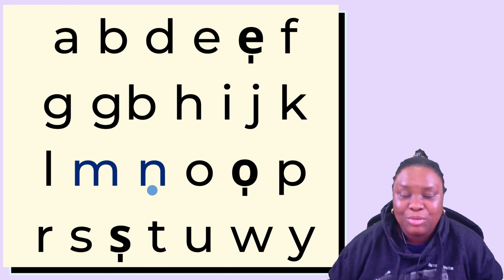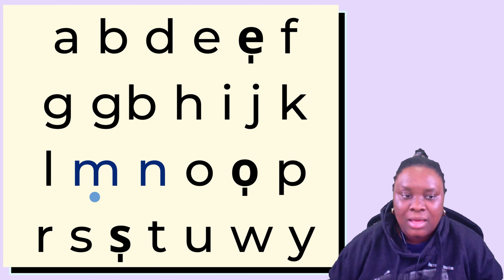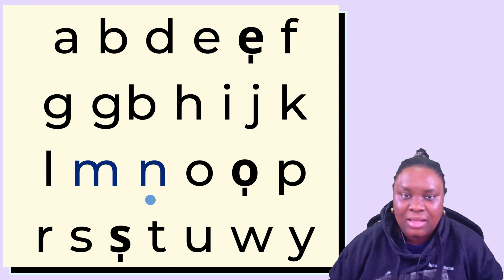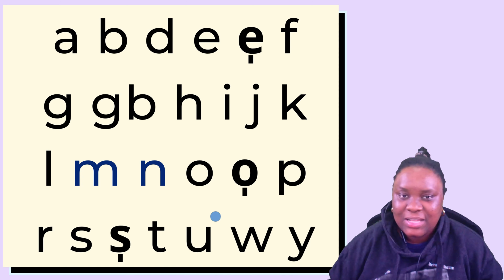The Yoruba alphabet letters: a, b, d, e, ẹ, f, g, gb, h, i, j, k, l, m, n, o, ọ, p, r, s, ṣ, t, u, w, y. These are the letters.